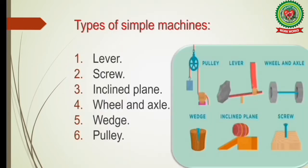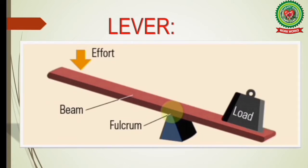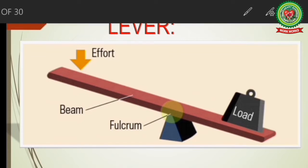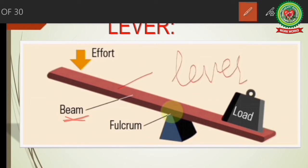There are six types of simple machines: lever, screw, inclined plane, wheel and axle, wedge, and pulley. A lever is a rigid rod that moves about a fixed point. As shown in the diagram, this rod is a lever. You must have seen a seesaw in the playground — a seesaw is an example of a lever.